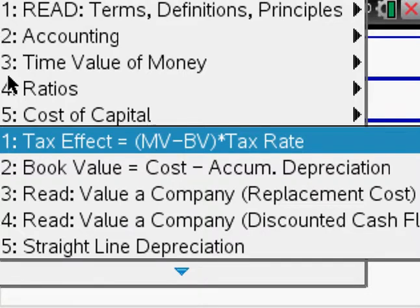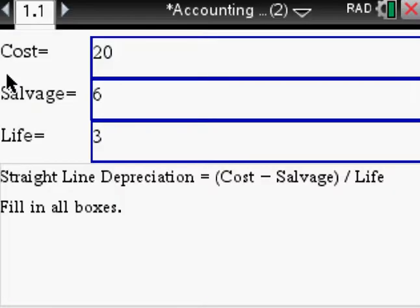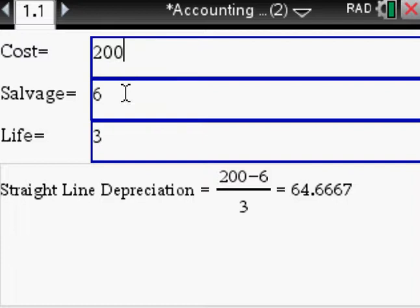Okay, say the cost is not 20 but 200, salvage 6, life 3, and the depreciation is 64.6667. So if we modify our numbers, we can immediately see how the depreciation changes. So that's a great tool to model numbers, experiment with numbers.